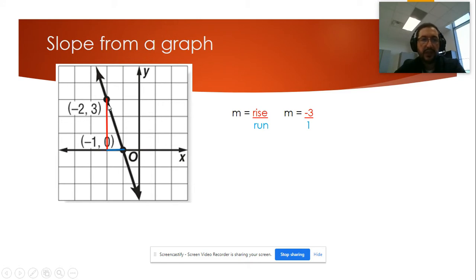Just remember, if I move down, it's negative. If I move up, it's positive. So the slope will be negative three divided by one. The slope will be negative three.